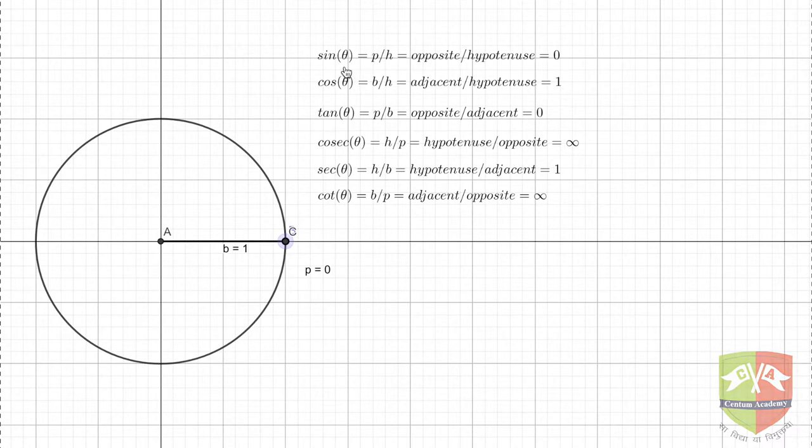So cos of 0 is 1, sin of 0 is 0, tan of 0 is 0 because perpendicular length is 0. Cosecant is undefined actually, why? Because the perpendicular length is 0. Secant 0 is 1 because both h and b are 1, and cot again is undefined though it has been shown as infinity over here.